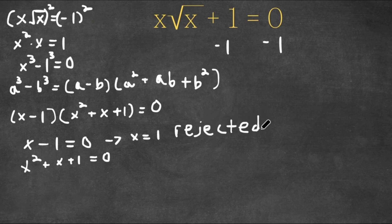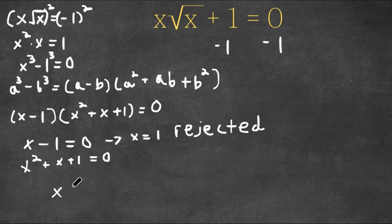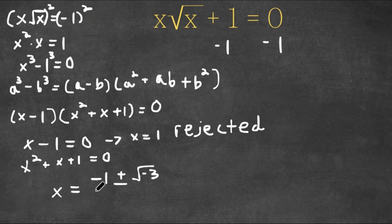Now let's go ahead and try our second equation. To solve this, we need to plug it into the quadratic formula. By doing that, we simply get negative 1 plus or minus the square root of negative 3, all over 2.